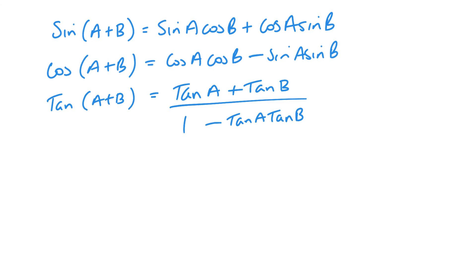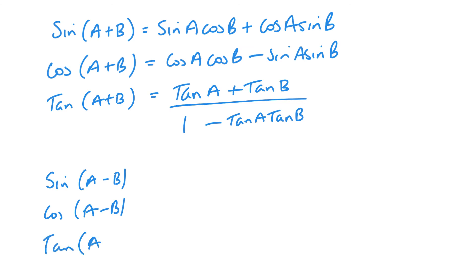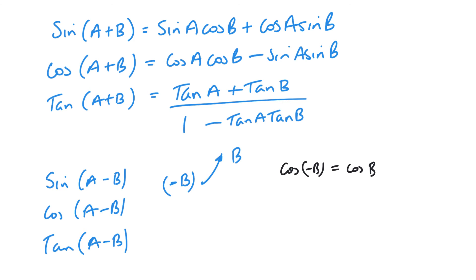If you want to find sin(A−B), cos(A−B), or tan(A−B), all you need to do is substitute minus B into your B in these equations, remembering that cos of a negative angle is just the same as cos of that angle, whereas sine of a negative angle is the same as negative sine of the positive angle. So you use these two rules when applying it to change your addition formulae.